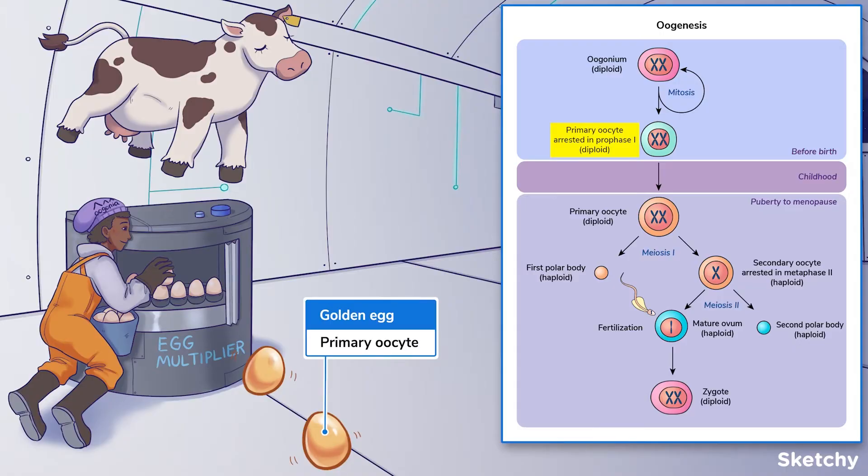By the time of birth, there'll be about 2 million primary oocytes, depicted by these golden eggs.